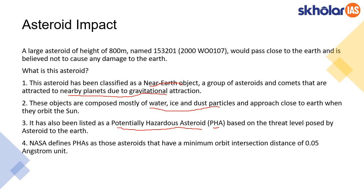This classification is based on the threat level that the asteroid poses to earth, and it is done by NASA. NASA defines PHA based on the minimum orbit intersection distance of 0.05 astronomical units. Students, you will have to remember two terminologies: potentially hazardous asteroid and near-earth object. These two terminologies can be asked in prelims, so make sure you understand them.